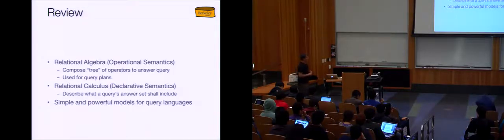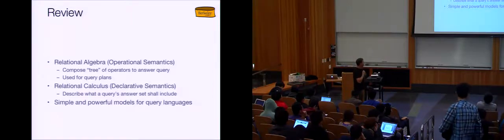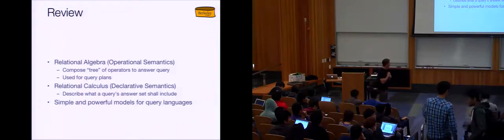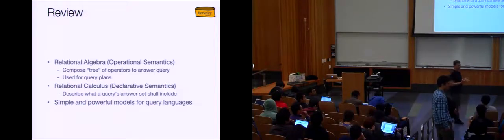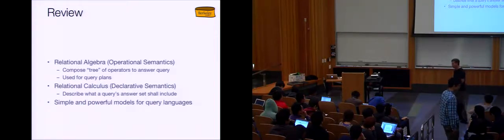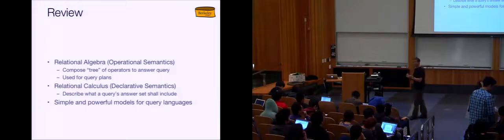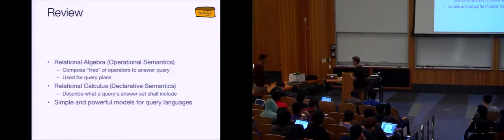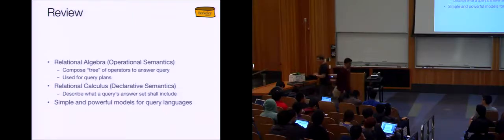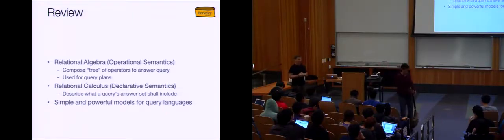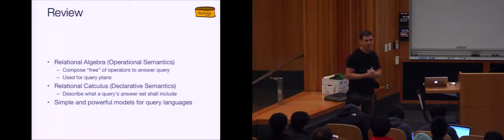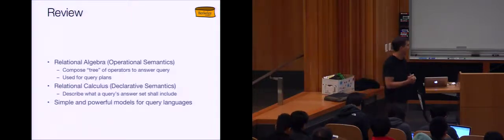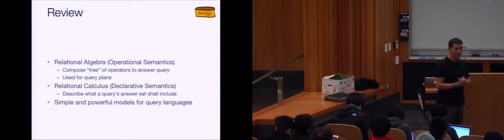We also spoke about the relational calculus, which has a declarative semantics. Rather than having an order of operations at all, you simply describe in logic what the answer set shall include — 'I would like all tuples such that blah blah blah' — and you don't say anything about how to achieve that result. The algorithmics are left to the computer; the programmer is really just specifying a description of the output in logic, which is a crazy, audacious thing to do.